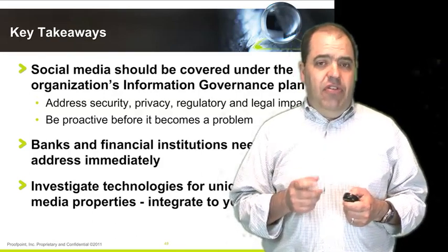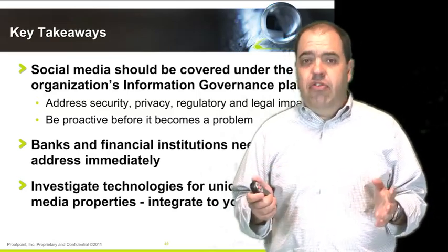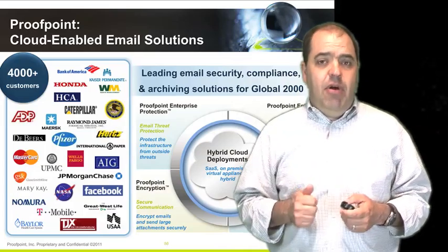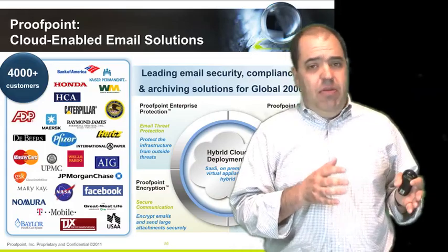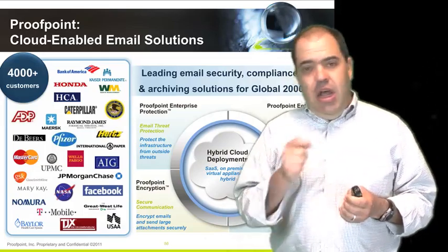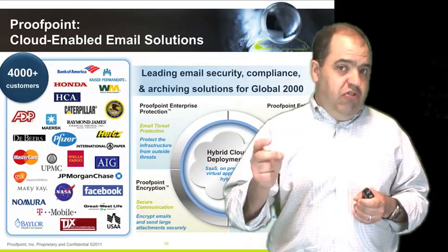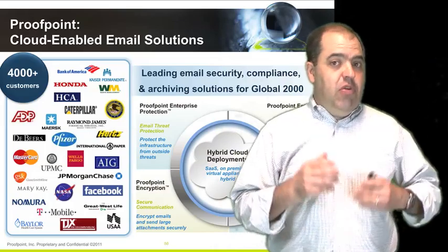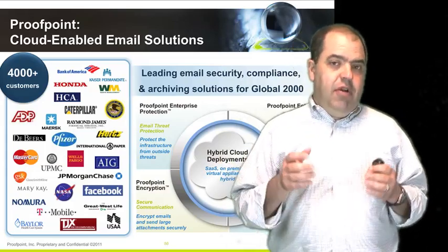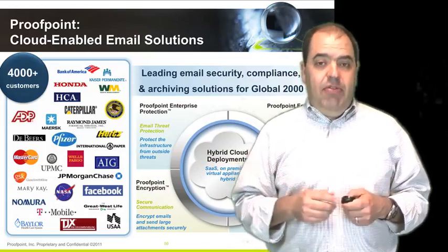To wrap up the series: Proofpoint is a leading provider of email security, compliance, and archiving solutions for large organizations. There are four main product areas. Proofpoint Enterprise Protection monitors inbound communications and blocks spam, viruses, malware, and phishing attacks. Proofpoint Enterprise Privacy looks at outbound communications to protect private and confidential information through blocking, quarantine, or encryption. And Proofpoint Enterprise Archive provides a secure cloud-based solution for email archiving. Thanks so much for your time.